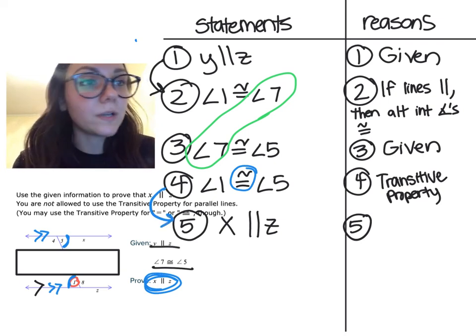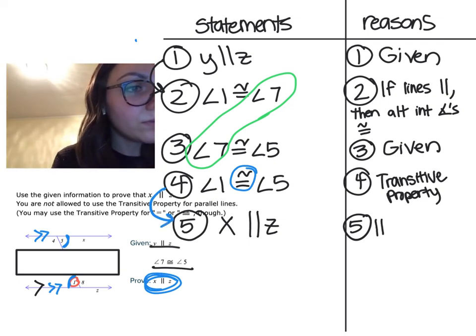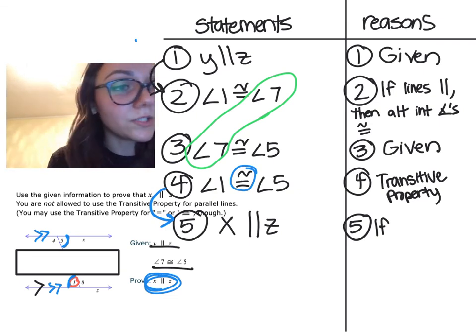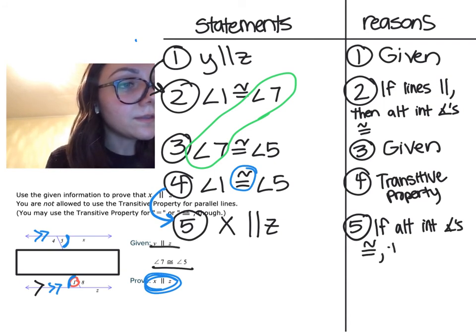So in other words, I would write, if the angle pair alternate interior are congruent, then lines parallel.